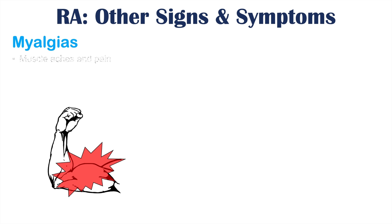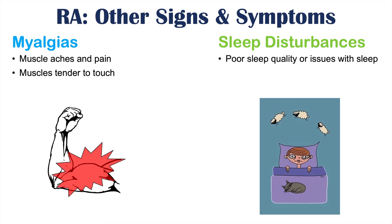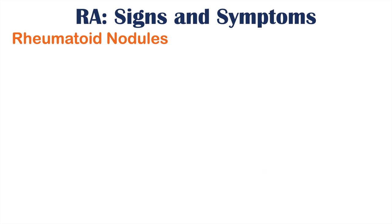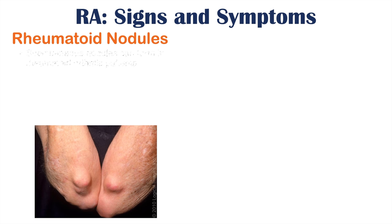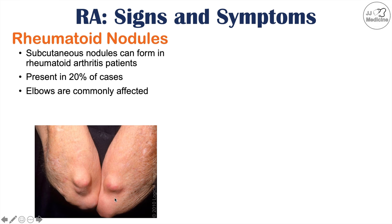Other signs and symptoms include myalgias — muscle aches and pain where muscles are generally tender to touch. Sleep disturbances are very common, occurring in up to 70% of patients with rheumatoid arthritis. Rheumatoid nodules are also an important sign — subcutaneous nodules presenting in roughly 20 to 30% of cases, commonly found at the elbows, as well as heels and toes.